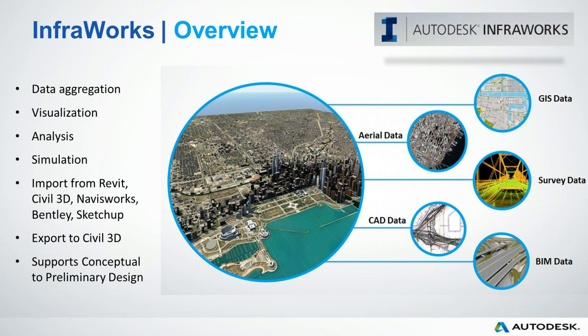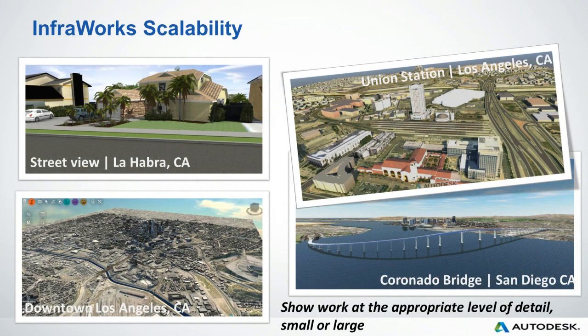InfoWorks 360 is very scalable. Whether we're creating information for very small sites — a single house on a small residential street, showing detail right down to the plants or faucets in the front yard — all of that can be shown very easily. But if we have to model or share information at larger scale, whether we're talking about city blocks, entire cities, or even entire regions, this product scales very well and is capable of handling both the very finite detail of a small model and the very large amounts of data required for very large models.